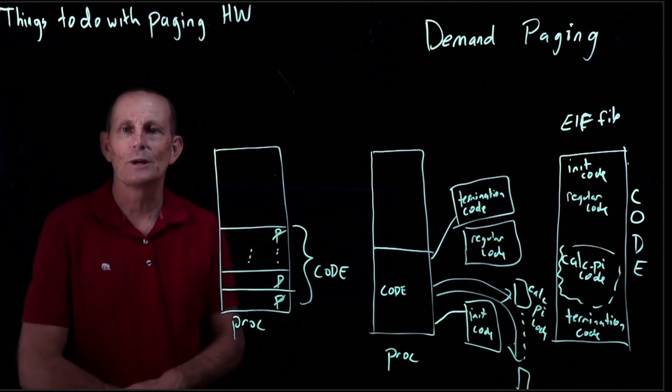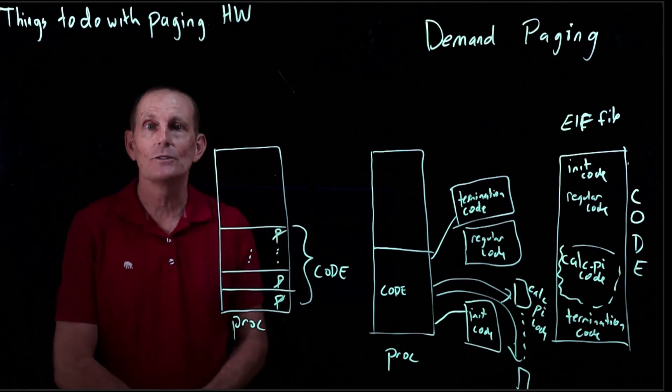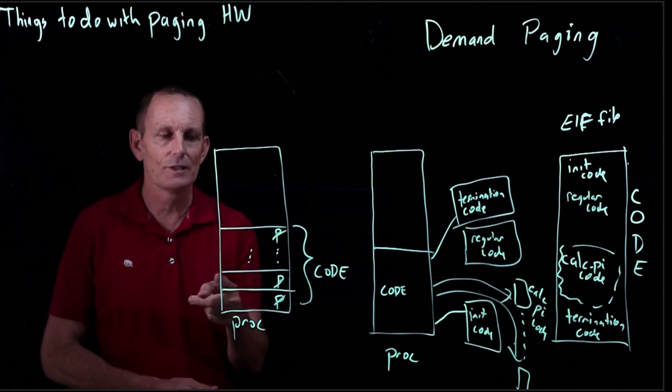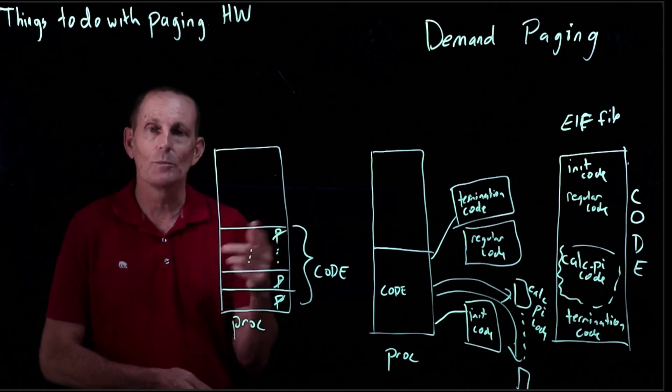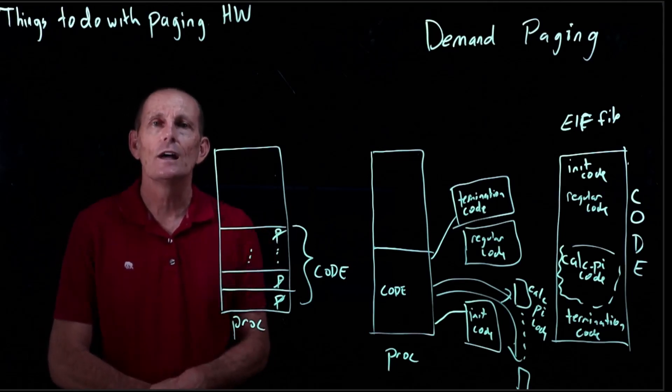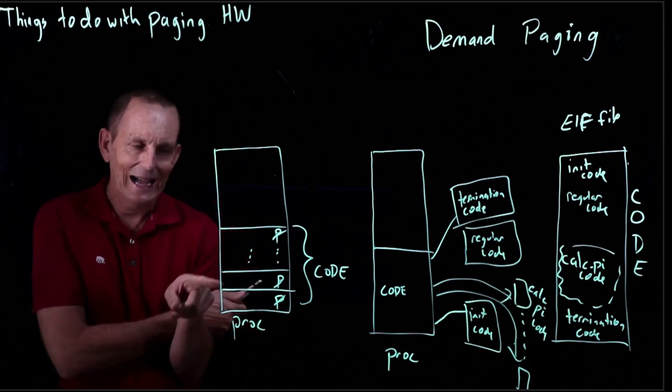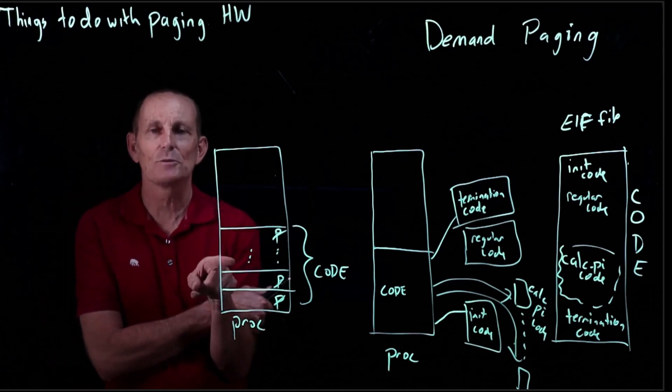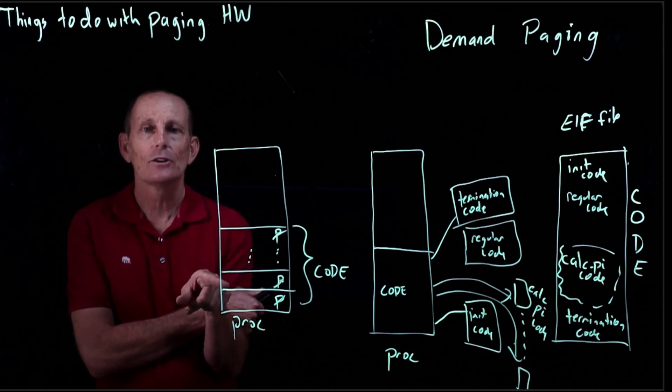And as we start to execute our program, we're going to get a page fault, right? Because it's going to use the EIP and it's going to try to go to one of these addresses where the beginning of the code is, and there is no page table entry, or rather it's invalid. And so then what will happen? We'll get a page fault. And the kernel says, 'Oh, I know where this address is within this procedure,' that is, within the code segment.